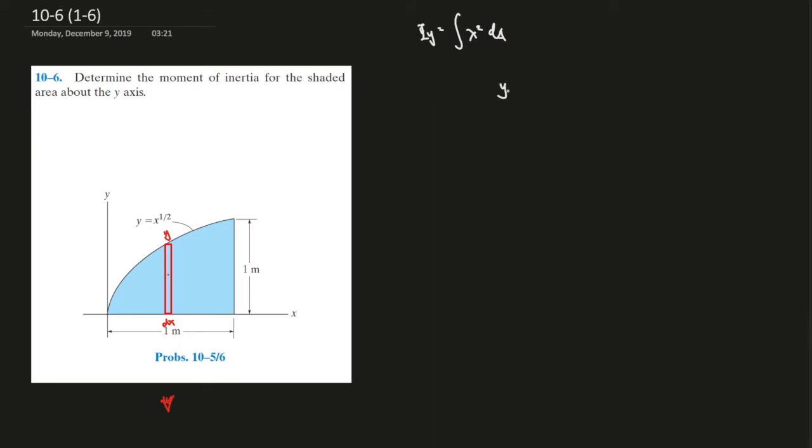So what's da? da is y times dx, times x squared from 0 to 1. Right, but we're just doing dx, so I have to write y in terms of x, so that would be y in here would be x to the power of 1 over 2 times 2, 0 to 1.